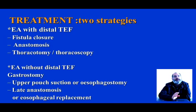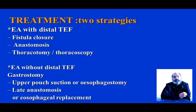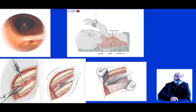Treatment depends on the situation — whether there is a distal tracheoesophageal fistula or not. We have two strategies. The first is oesophageal atresia with distal tracheoesophageal fistula: here we perform fistula closure with primary anastomosis, which can be realized by thoracotomy or thoracoscopy. The second is oesophageal atresia without distal tracheoesophageal fistula: here we perform gastrostomy with upper pouch suction or oesophagostomy, followed by anastomosis or oesophageal replacement. Here you can see the steps in oesophageal atresia with distal tracheoesophageal fistula.